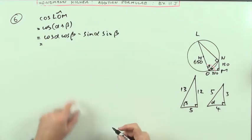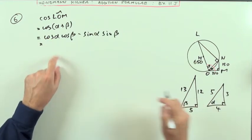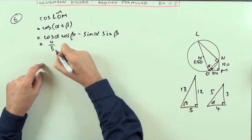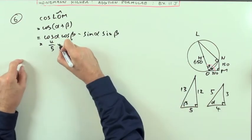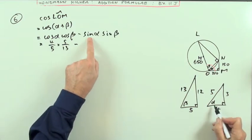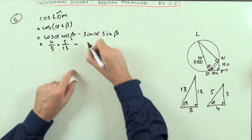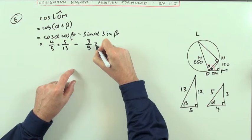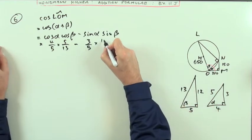And then pick them from the triangles. Cosine adjacent, 4 fifths. Cosine of beta adjacent, 5 thirteenths. Don't be tempted to cancel that. Sine of alpha opposite, 3 fifths. Sine of beta opposite, 12 thirteenths.